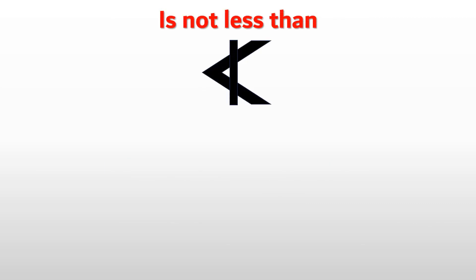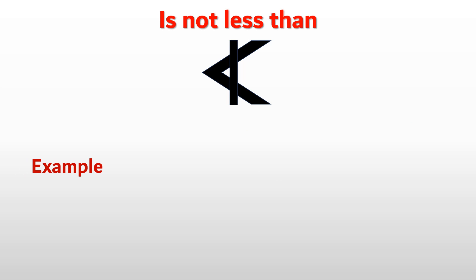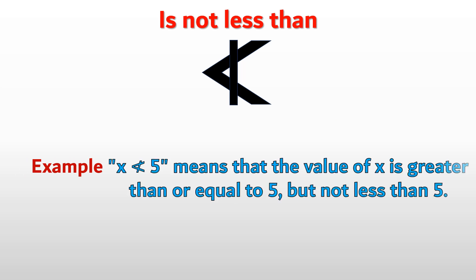Next, Not Less Than. These symbols are used to indicate that a value is greater than or equal to another value but not less than it. They represent inequalities where the left side is either greater than or equal to the right side, but not strictly less than it. Example: x is not less than 5 means the value of x is greater than or equal to 5 but not less than 5.